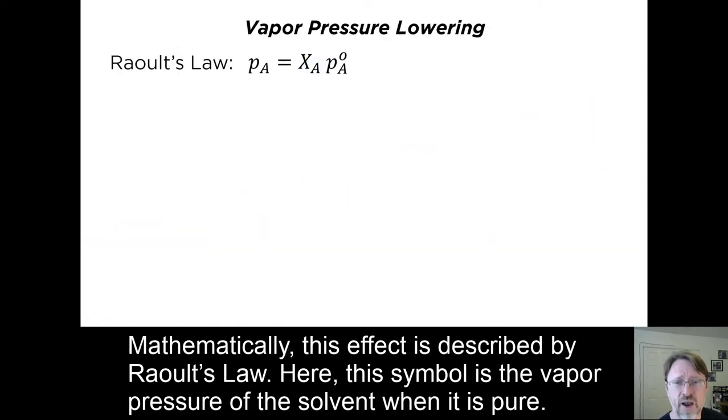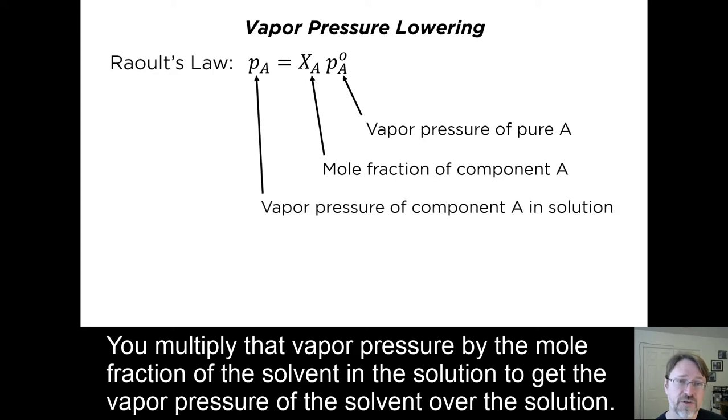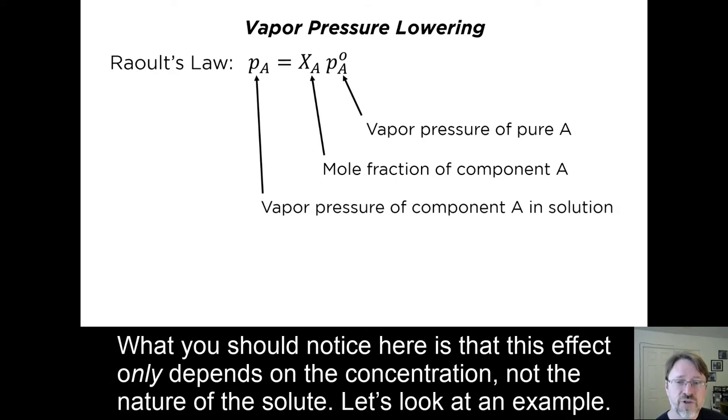Mathematically, this effect is described by Raoult's law. Here, this symbol is the vapor pressure of the solvent when it is pure. You multiply that vapor pressure by the mole fraction of the solvent in the solution to get the vapor pressure of the solvent over the solution. What you should notice here is that this effect only depends on the concentration, not on the nature of the solute. Let's look at an example.